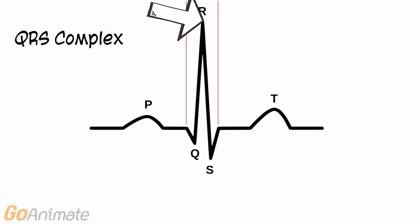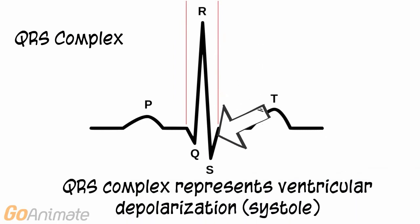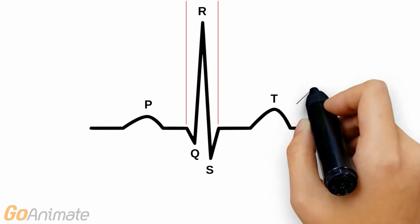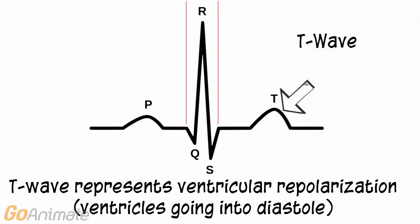The largest part of the ECG is the QRS complex, which represents ventricular depolarization or systole. Atrial diastole also occurs at this time. The T wave represents ventricular repolarization, and the ventricles are going into diastole.